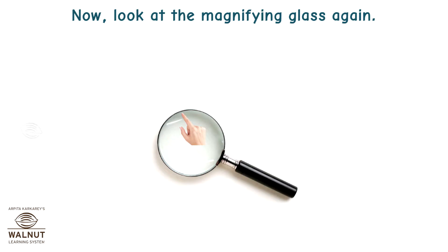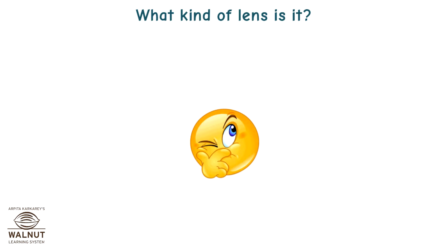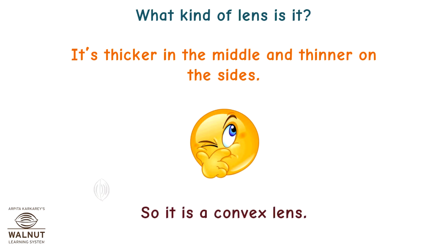Now, look at the magnifying glass again. Feel its edges and feel its middle. What kind of lens is it? It's thicker in the middle and thinner on the sides. So it is a convex lens.